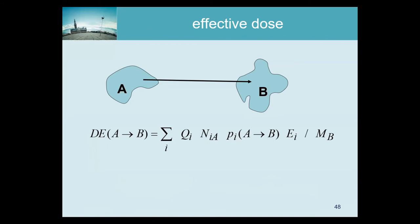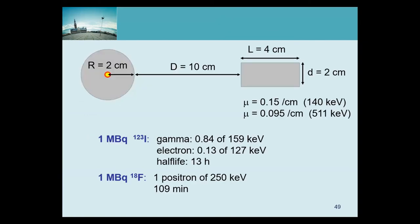This is essentially what OLINDA and similar algorithms compute. These algorithms use predefined patient models — initially just one, now including a man, a woman, and a few children. As a simple course example, I made it as simple as possible but complicated enough to see the effect: there are two objects, and I place either iodine or FDG in the center of one organ, then compute how much radiation is deposited in that organ and in the other.